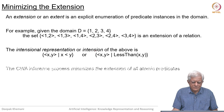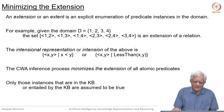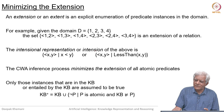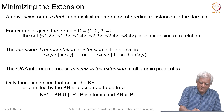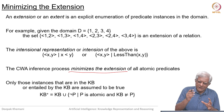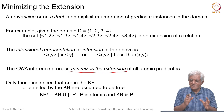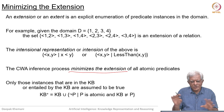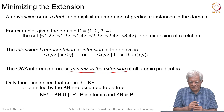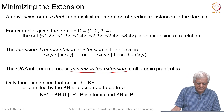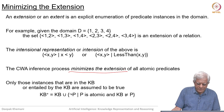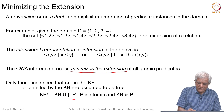What the closed world inference process does is minimize the extension of all atomic predicates. When we say minimize, we mean we only keep those things which we know to be true or which can be inferred to be true, and we throw everything else away — so the extension is as small as possible. Only those instances that are in the KB or entailed by the KB are assumed to be true, and we add 'not p' for all those p which are not entailed by the KB.